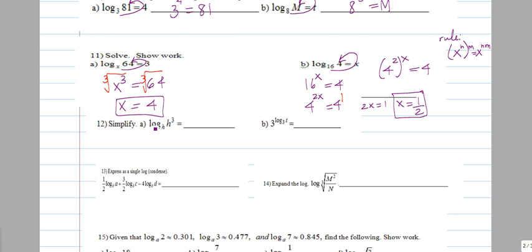Here, simplify. Log base h of h to the 3rd. These cancel each other out, and we just get 3. This is one of the properties of log base b of b to the x gives us x. Because this is saying b to what exponent is b to the x? Well, b to the x is equal to b to the x. Same thing here. These two cancel each other out, and we just get t.